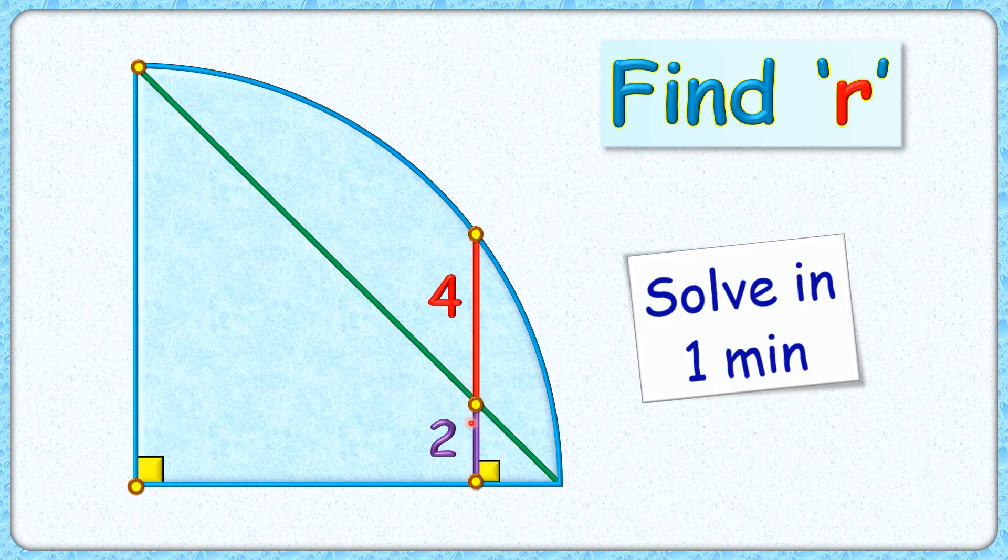It's getting divided into lengths of 2 centimeters and 4 centimeters by this green line segment. The exciting part is with this limited data, we have to find the radius of this quadrant.